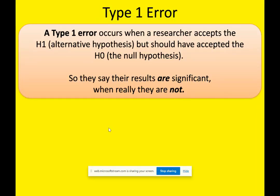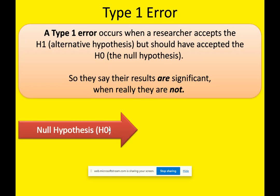This video is on Type 1 and Type 2 errors in psychology. When we're looking at Type 1 errors and Type 2 errors, we also need to know about determining significance and levels of probability. A Type 1 error in psychology is when a researcher accepts the H1, which is our alternative hypothesis, but should have accepted the H0, the null hypothesis. So they say the results are significant when really they're not. And in order to understand that, you do need to know about the null and the alternative hypotheses.